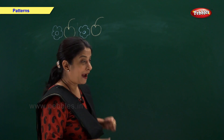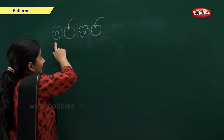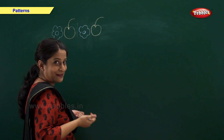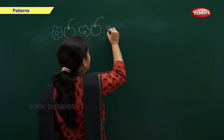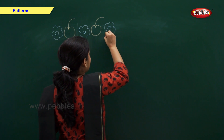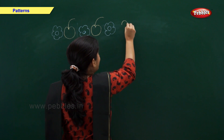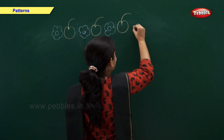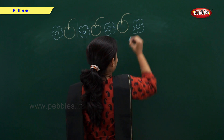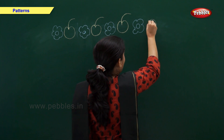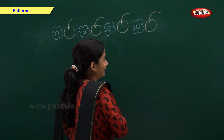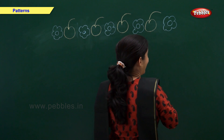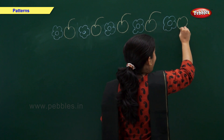In this pattern we have a blue flower and yellow apple. A blue flower and yellow apple. So let's complete this pattern. A blue flower and yellow apple. A blue flower and yellow apple. A blue flower and yellow apple.